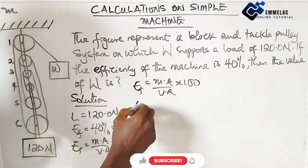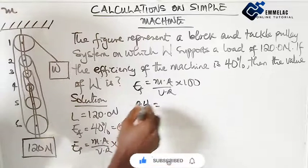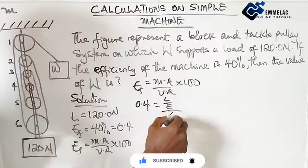Inputting the necessary parameters, here we have 0.4 equals to mechanical advantage, equals to L over E over VR, equals to L over E over 6.